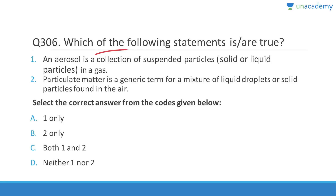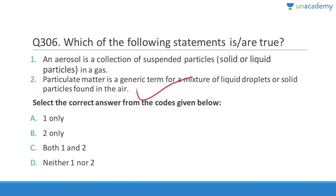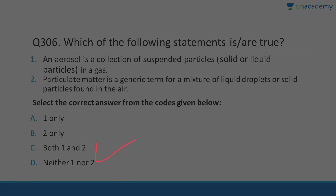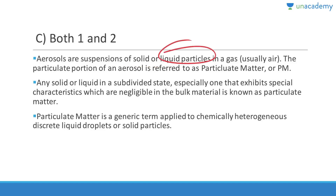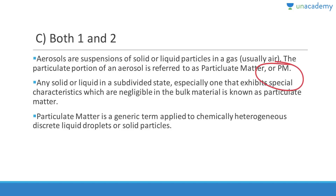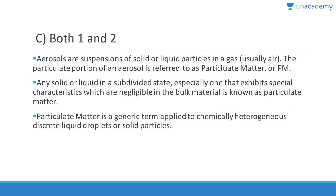Question 306: An aerosol is a collection of suspended particles — either solid or liquid — in a gas. Particulate matter is a generic term for a mixture of liquid droplets or solid particles found in the air. Both statements are correct. Answer is C (both 1 and 2). Particulate matter is usually of two types: PM2.5 (less than 2.5 microns) and PM10 (less than 10 microns).